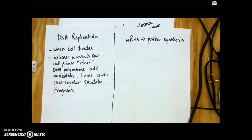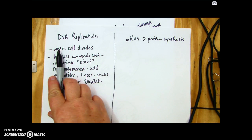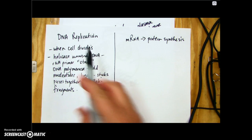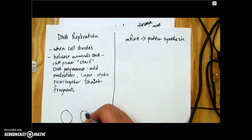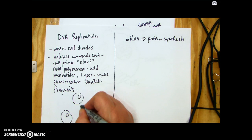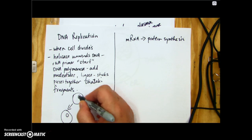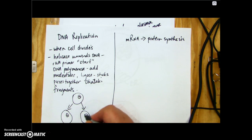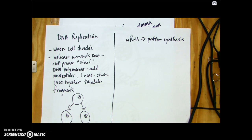The purpose of DNA replication is to make a copy of the DNA so that when the cell divides, each of the daughter cells contains the same DNA. The parent cell makes two daughter cells with the exact same DNA inside — that's why cells undergo DNA replication.